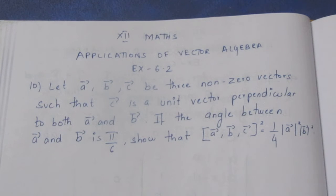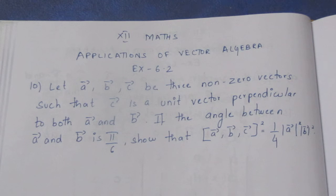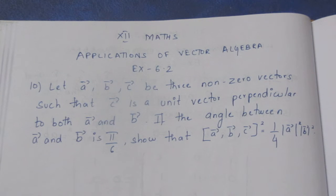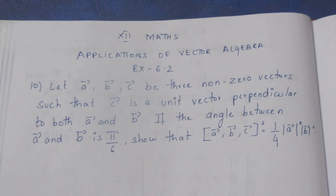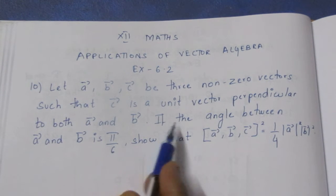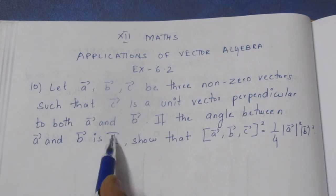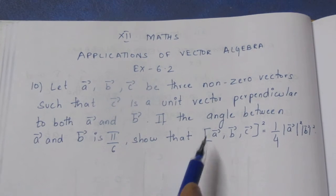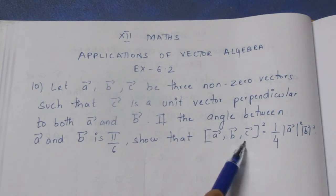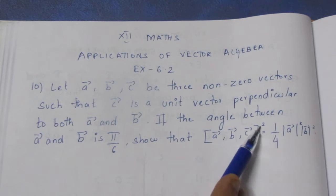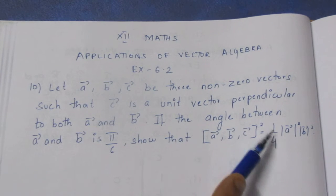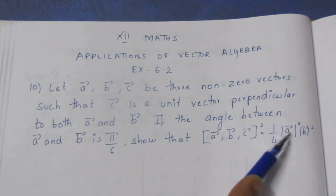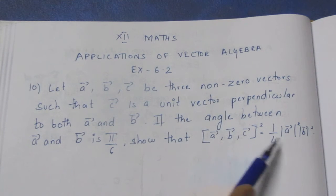Let a vector, b vector, c vector be 3 non-zero vectors such that c vector is a unit vector perpendicular to both a vector and b vector. If the angle between a vector and b vector is π/6, show that the box product of a vector, b vector, c vector, whole square, is equal to 1/4 times modulus of a vector squared times modulus of b vector squared. This is the proof.